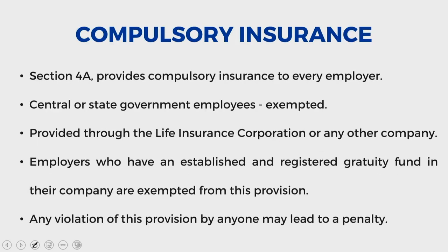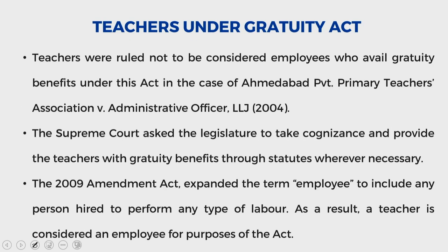When you look into the compulsory insurance part within this act, section 4 of the act provides compulsory insurance to every employer — other than those belonging to the central government or state government — through the LIC, Life Insurance Corporation, or any other company associated with the government. However, employers who have an established and registered Gratuity Fund in their company are exempted from this provision. The government may also make rules for the enforcement of this section, and any violation of this provision may lead to penalty.